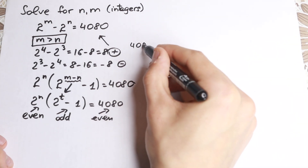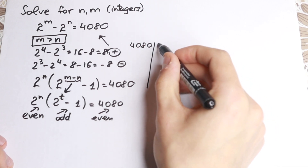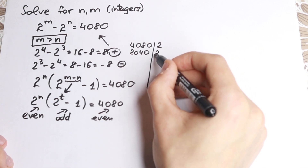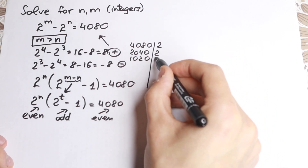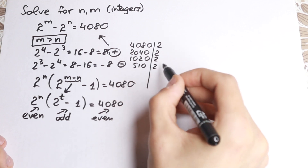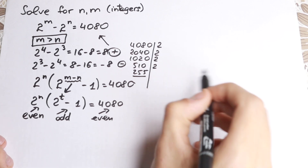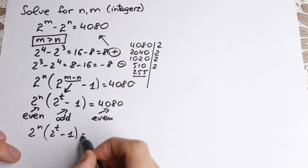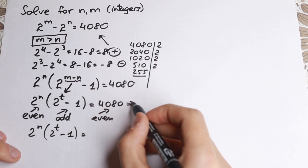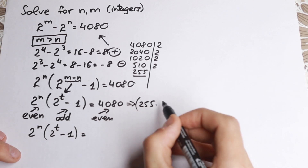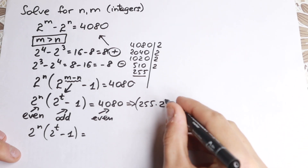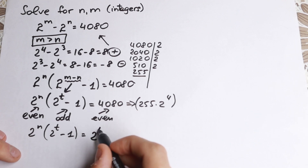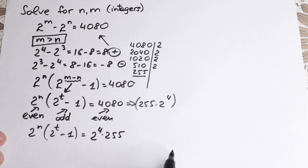So 4080 — let's factor it. Dividing by 2 gives 2040. Dividing by 2 again gives 1020. Dividing by 2 gives 510. Dividing by 2 gives 255. That's an odd number so we can't divide by 2 anymore. So we can write 2 to the n times 2 to the power t minus 1, equal to 4080, which equals 2 to the fourth times 255.